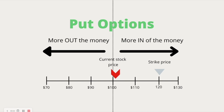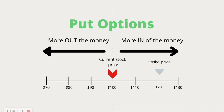Before we get into the intrinsic and extrinsic value stuff, let's examine put options. When it comes to a put option, it's actually the opposite. So if the stock price is currently trading at $100 and you bought the $120 strike, that would be $20 in the money. The reason why it's the opposite: when you're buying a put, you have the right but not the obligation to sell a hundred shares of stock at the current strike price. So at $120, when we purchased the $120 put, that means we have the right to sell a hundred shares of stock for $120 when the stock is currently at $100.